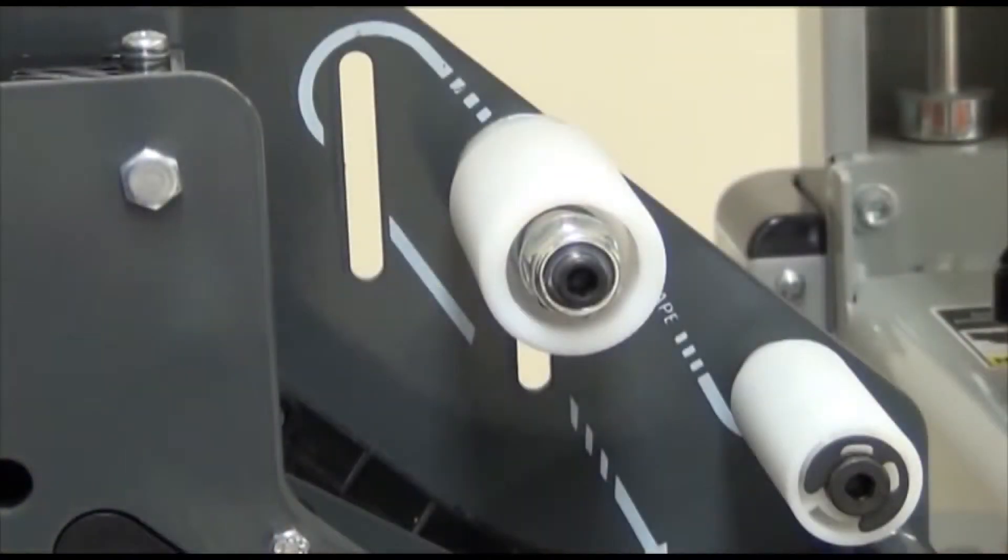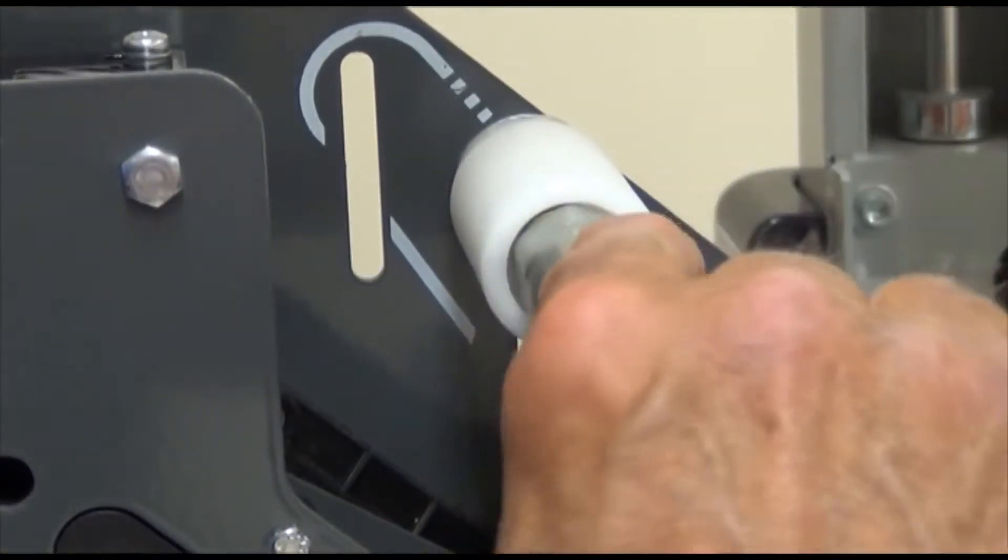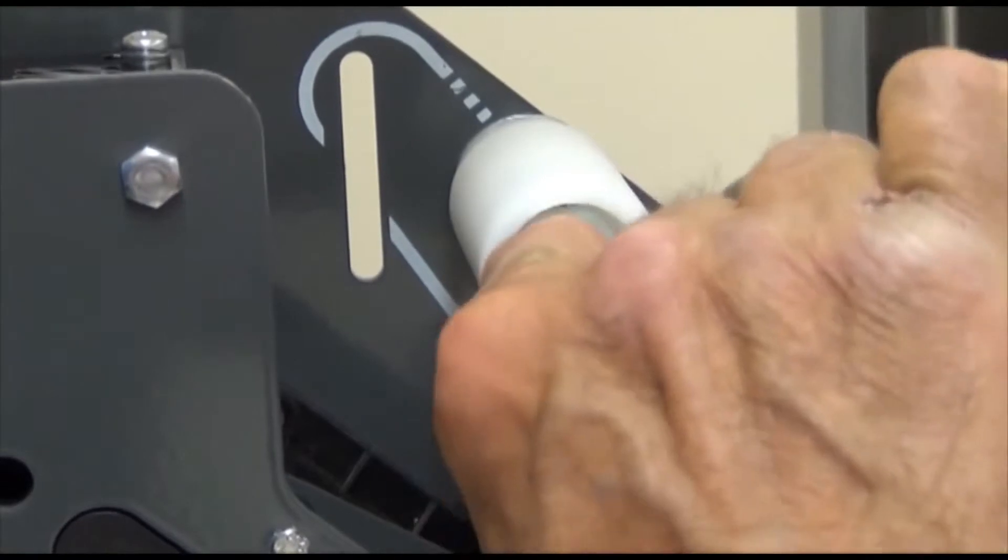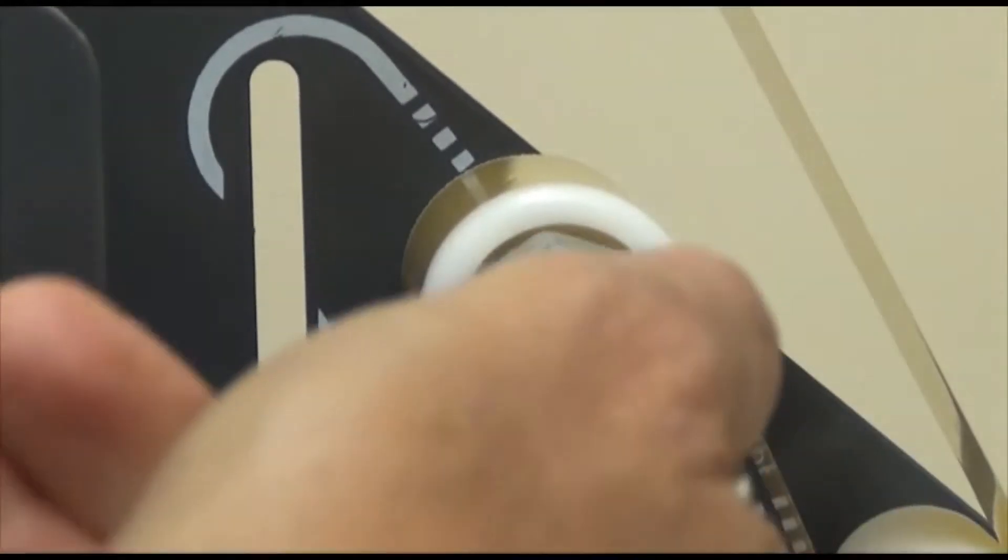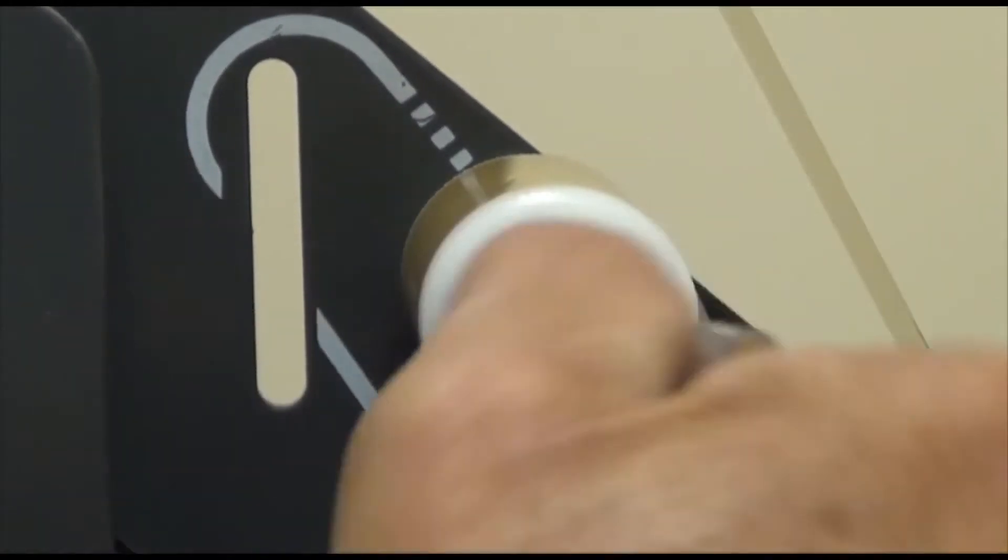If you discover you're having cutoff problems as you run your production, you may have to slightly increase tension. If you're getting flags or tabs on the trailing end of the case, you may have to decrease tension. Check the troubleshooting segment before you make any adjustments.